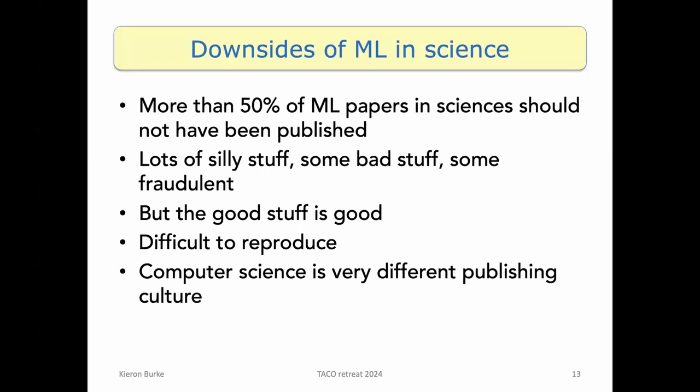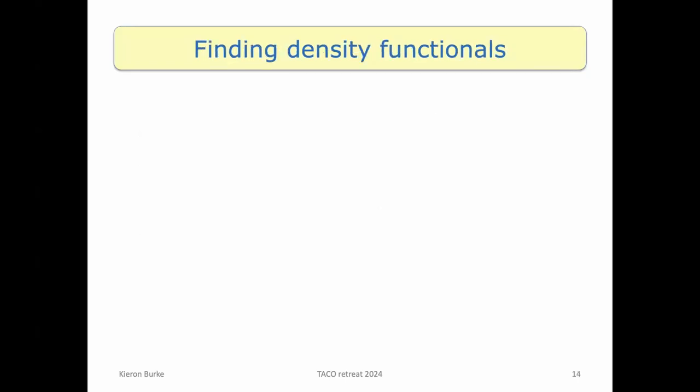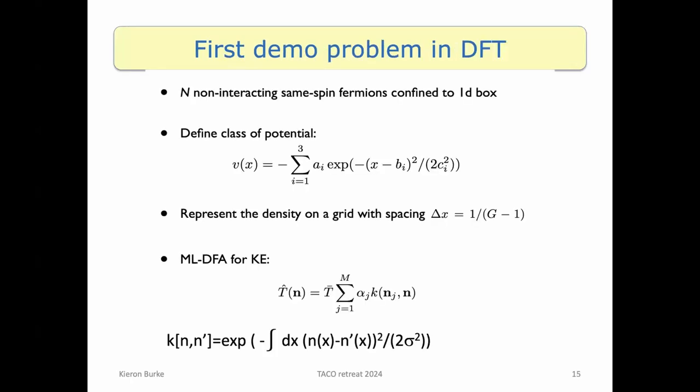Okay, so my part in the downfall of humanity is finding density functionals, right? So that's what I care about, as we heard about on Friday. And we did this thing years ago. We took particles in a box, the simplest possible problem, and what we wanted to find was what's called the Kohn-Sham kinetic energy. So this is just the kinetic energy of fermions, and we just put them in a box.